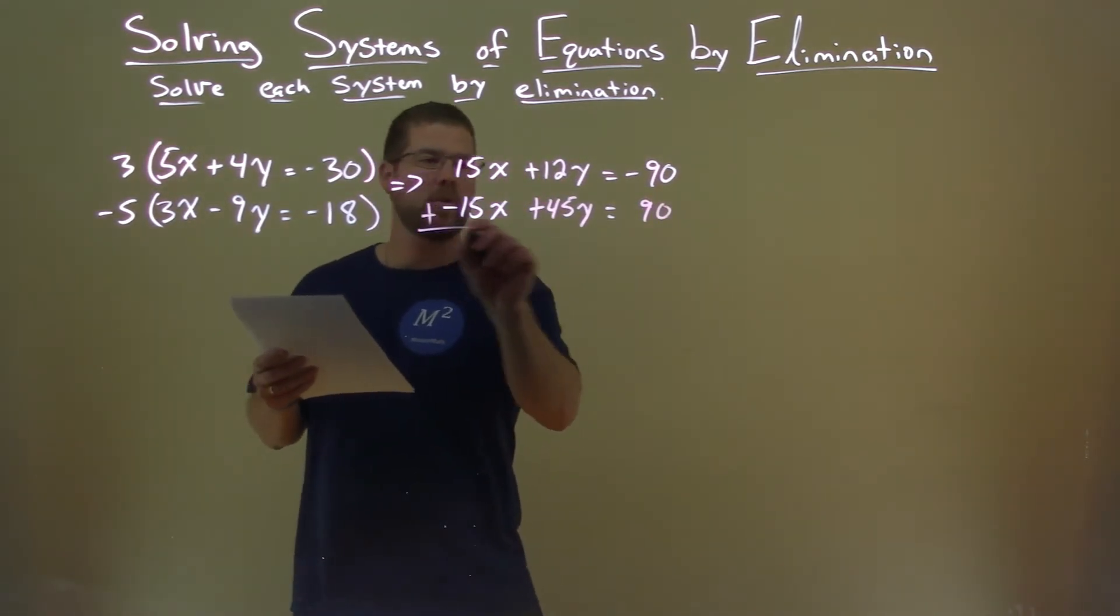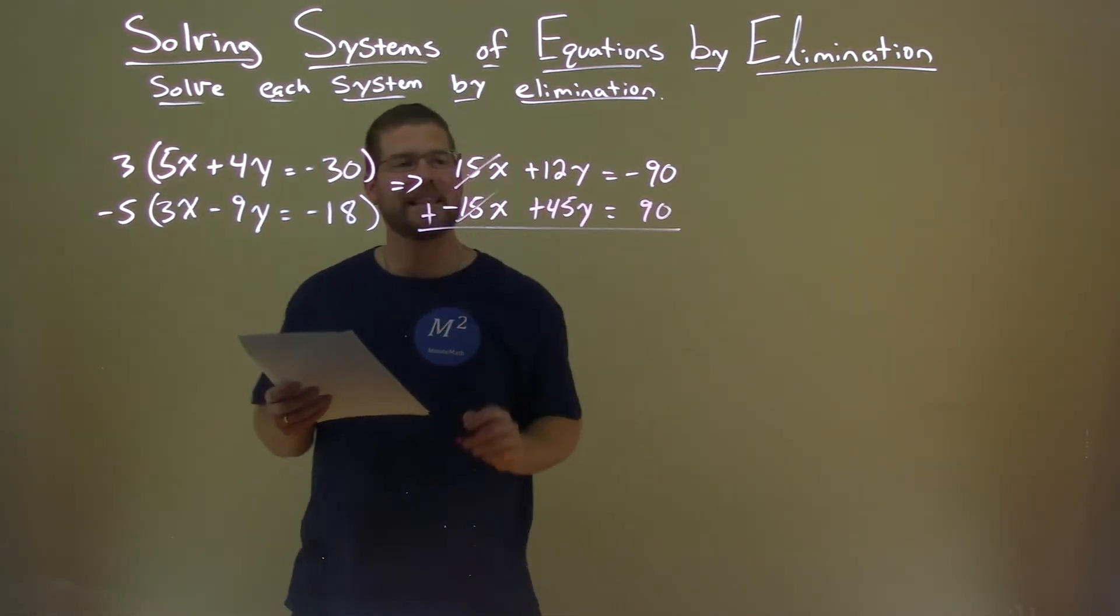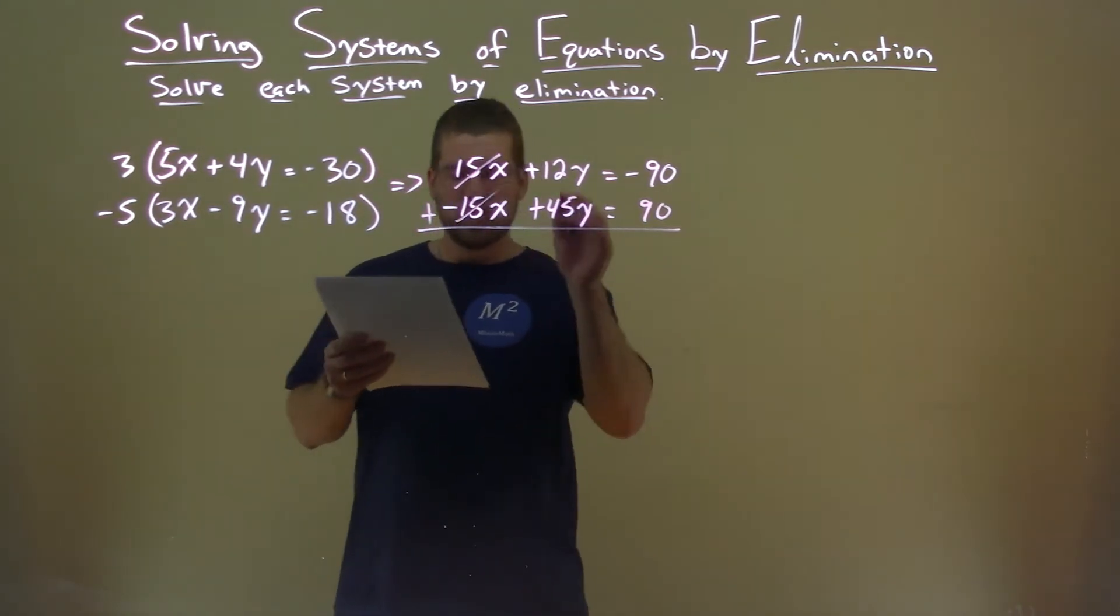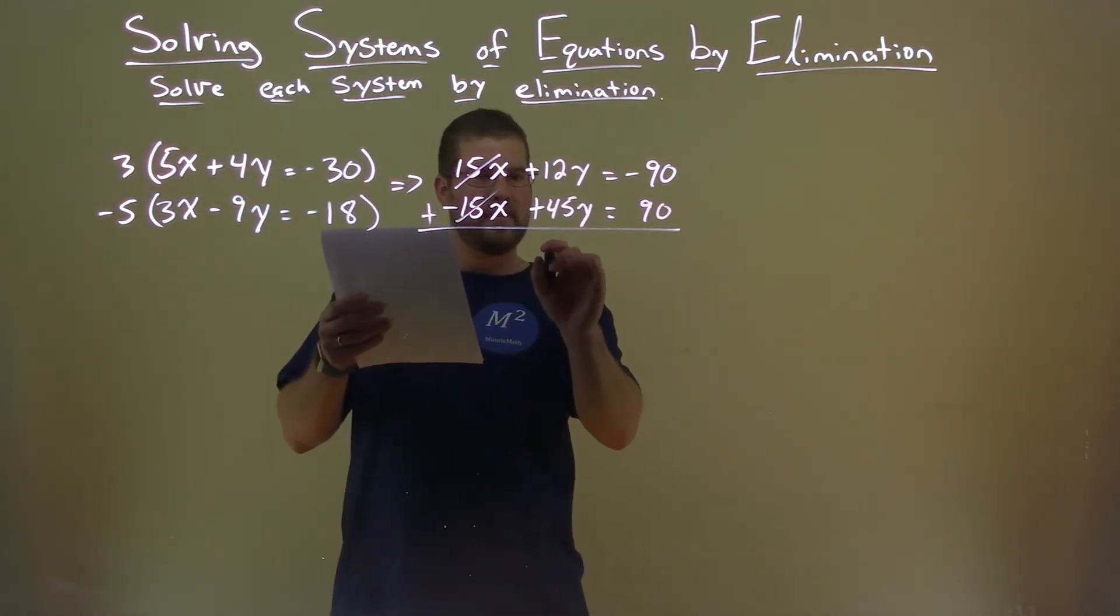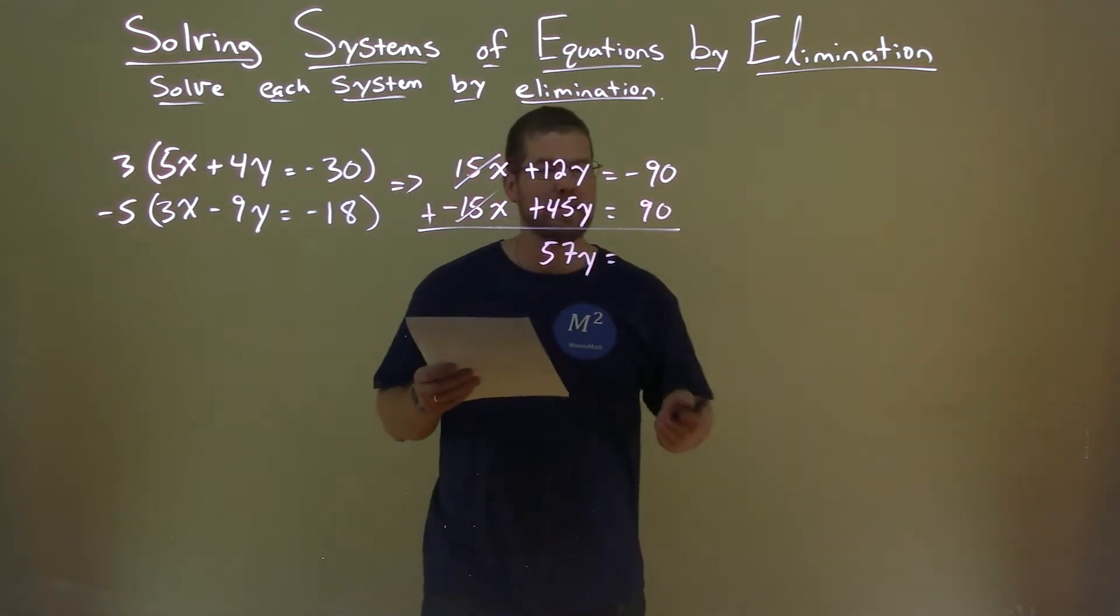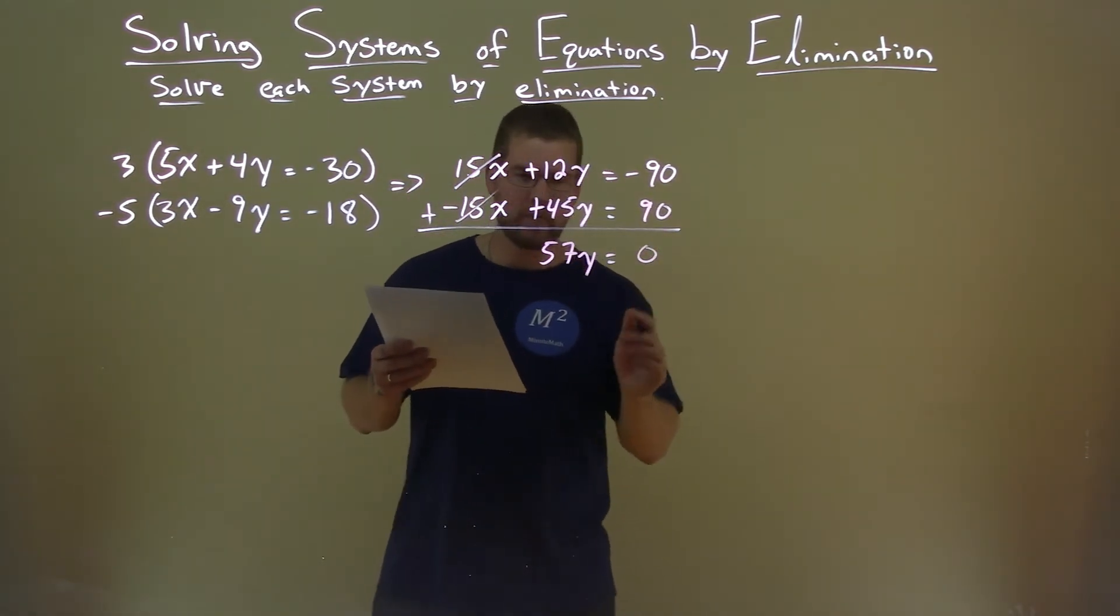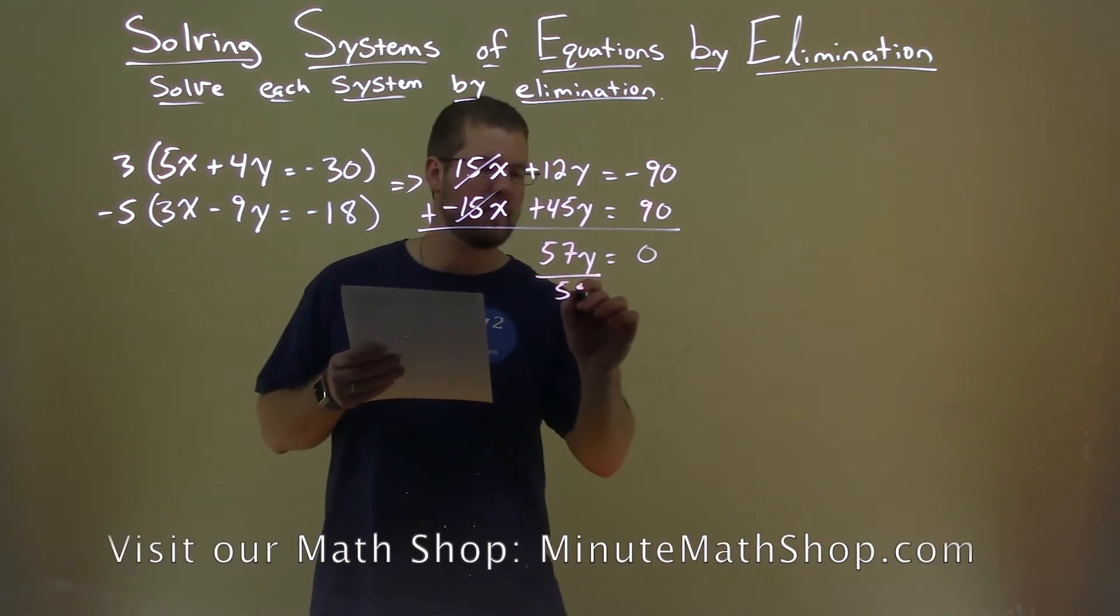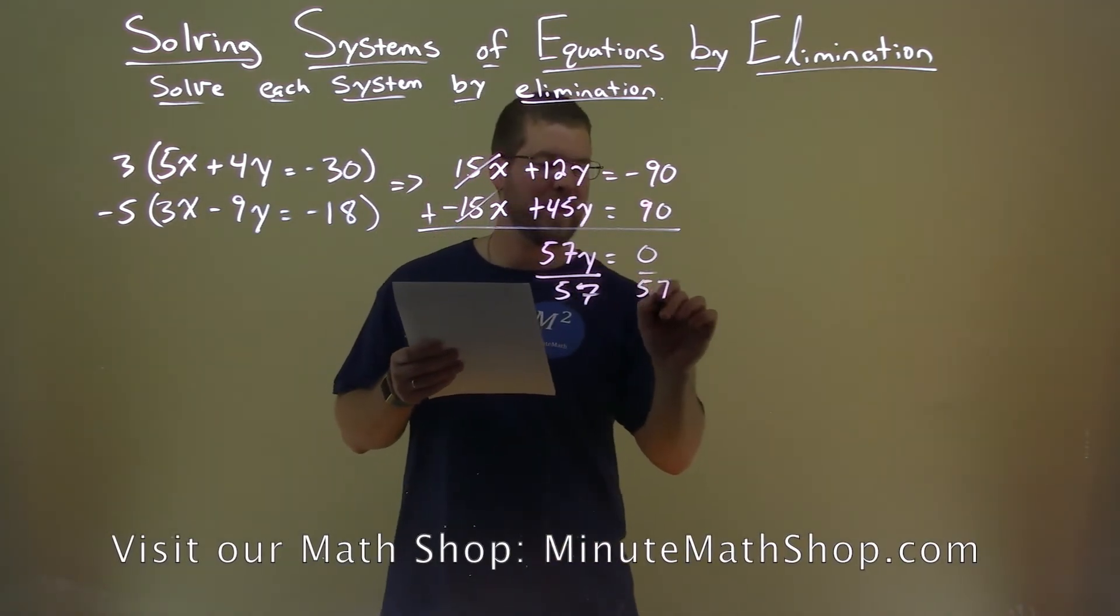We add the two equations here. The x's eliminate. That was the goal. 12y plus 45y is 57y. Negative 90 plus 90 is just 0. Be careful here. We still have to divide by 57 both sides.